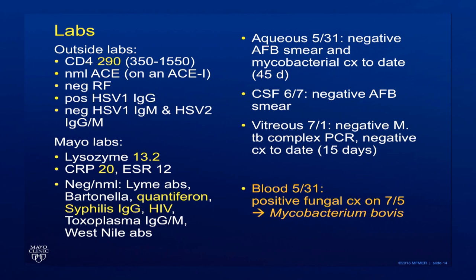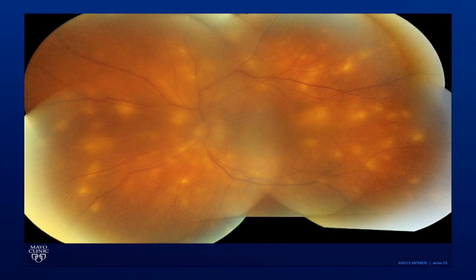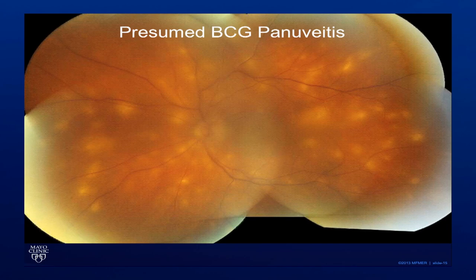Finally, the blood culture, which was obtained early on, after more than a month had a positive fungal culture for Mycobacterium bovis, which is a strain of mycobacterium that differs from tuberculosis. At this point we presumed that his diagnosis was BCG pan-uveitis.